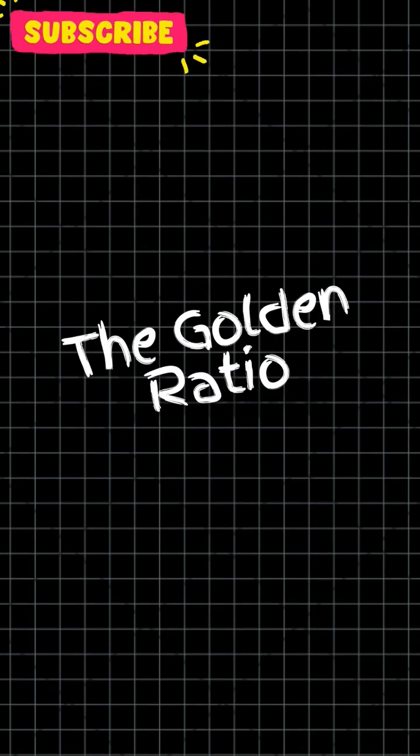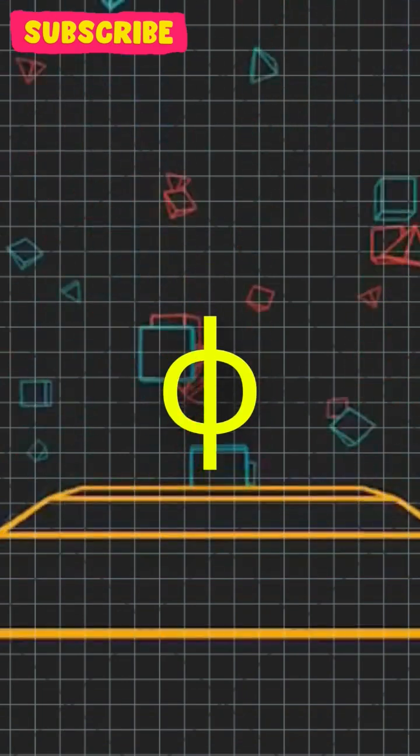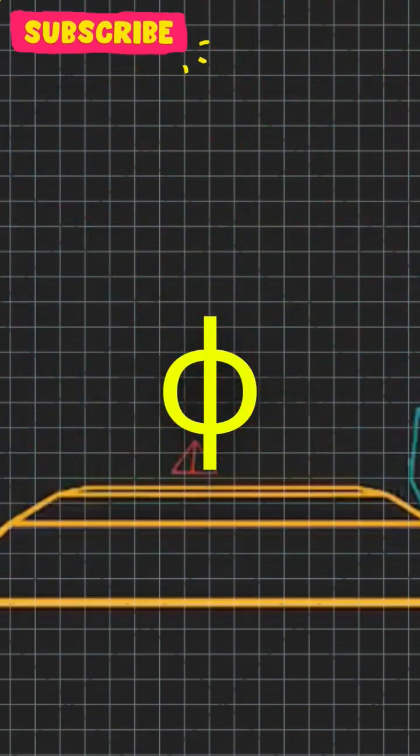The golden ratio, often denoted by the letter phi, is a special mathematical constant that appears in various scientific contexts. Let's see what it is in less than a minute.